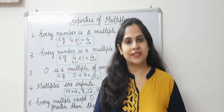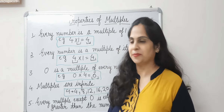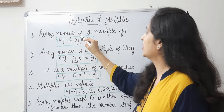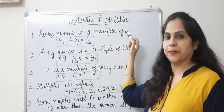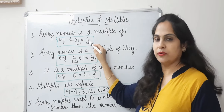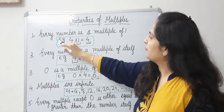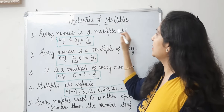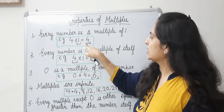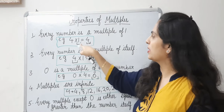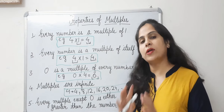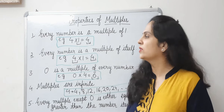Now let's understand the properties of multiples. The first property is: every number is a multiple of 1. For example, 4 multiplied by 1 is equal to 4. So every number is a multiple of 1 — in this way, all numbers are multiples of 1.